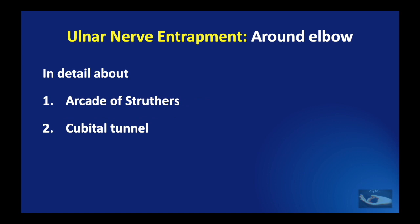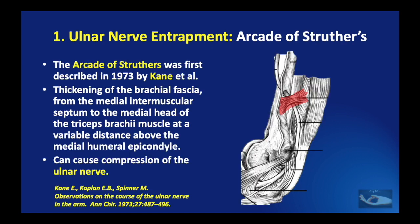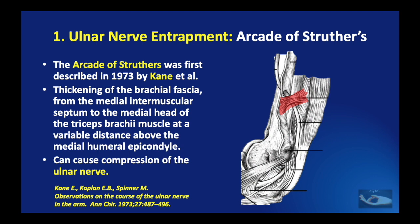The arcade of Struthers was first described in 1973 by Kane, referring to thickening of the brachial fascia from the medial intermuscular septum to the medial head of triceps brachii at a variable distance above the medial humeral epicondyle, which can cause compression of the ulnar nerve. This differs from the Struthers ligament, described by John Struthers in 1854, which consists of a fibrous band from a bone spur on the anteromedial surface of the lower third of the humerus — a supracondylar process — to the medial humeral epicondyle, causing compression of the median nerve and brachial artery.